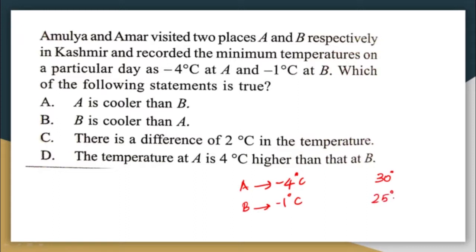Similarly here, minus four is lesser than minus one, so definitely A is cooler than B. Option A is the correct answer. Option B says B is cooler than A — that is not correct, as B has more temperature than A.